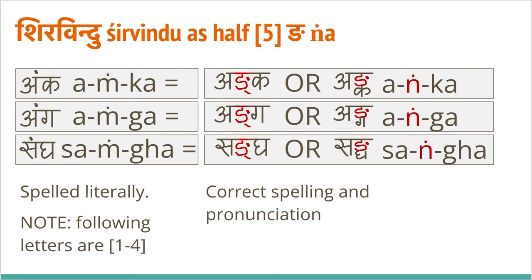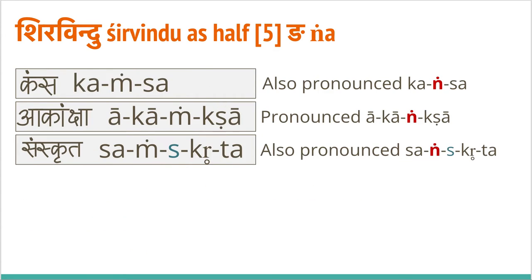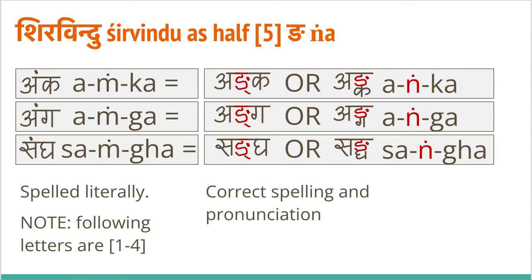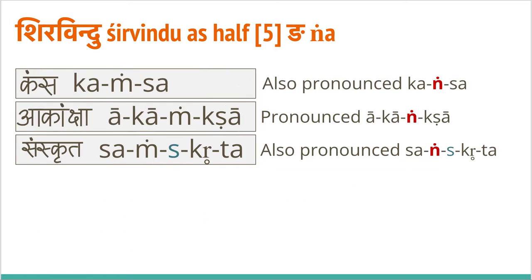Now we look at sirvindu as a representation of some half letters. On the left side, if you were to literally pronounce them, there would be 'amka', 'amga', 'samga' — that is not the correct pronunciation. The correct spelling is written on the right hand side. I suggest using the left form — it's easier to understand; try to avoid the hanging ones. So this is 'anka', 'anka' with the nasal, 'anga', 'sangha'. A few other cases where ng is not followed by kabarga — some can be pronounced as 'kamsa', and 'kongsa' is also possible.